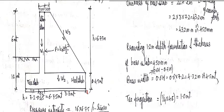So 0.6H into 7.2 is 4.32 meter. So take rounding out to 4.5 meter. So width of the base slab taking it as 4.5 meter.